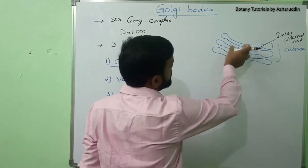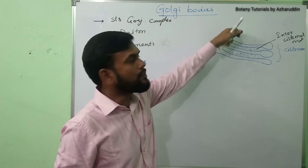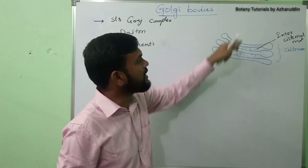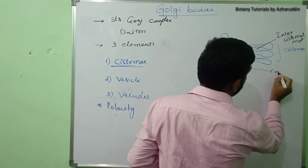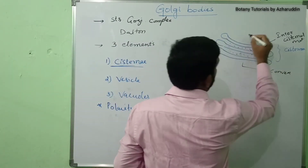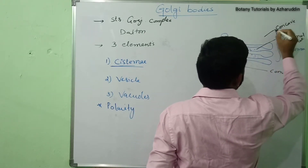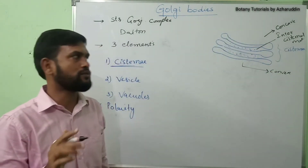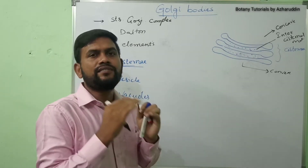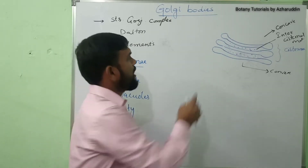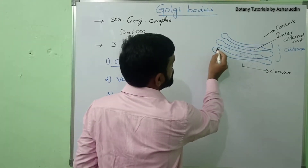The cisternae are slightly curved. Due to this curve, they have a concave side and a convex side. The ends of the cisternae are swollen or bulged.